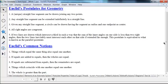Things which equal the same thing are also equal one another. If equals are added to equals, the wholes are equal. If equals are subtracted from equals, the remainders are equal. Things which coincide with another equal one another, and the whole is greater than the part.